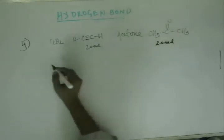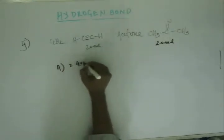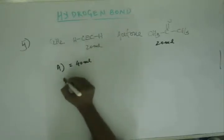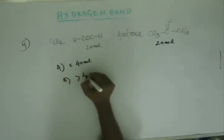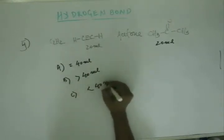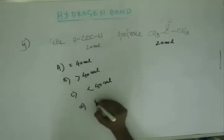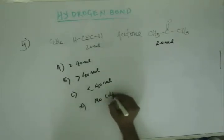Your options are: equal to 40ml, B, greater than 40ml, C, less than 40ml and D, I have no idea.